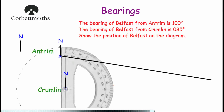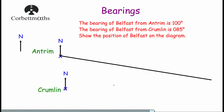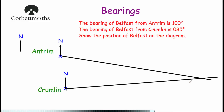So what we're now going to do is draw a nice straight line from Crumlin through that point, and it looks something like this. Where those two lines meet is the position of Belfast — so here is where Belfast would be, right there. And that's it. If you want to show the position of a location on a diagram when you're given the bearing of that place from two different locations, draw two lines showing those directions, and where they meet will be the position of that place.